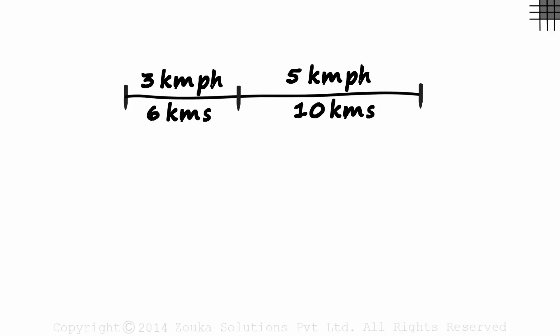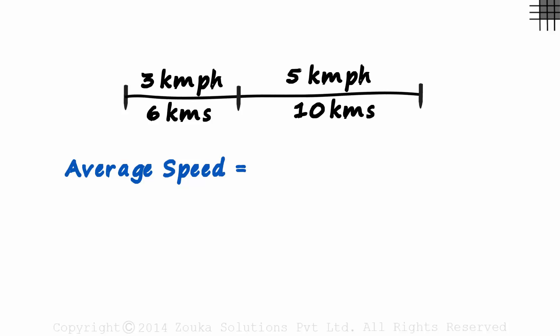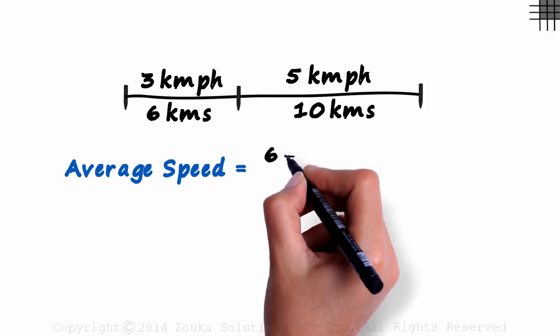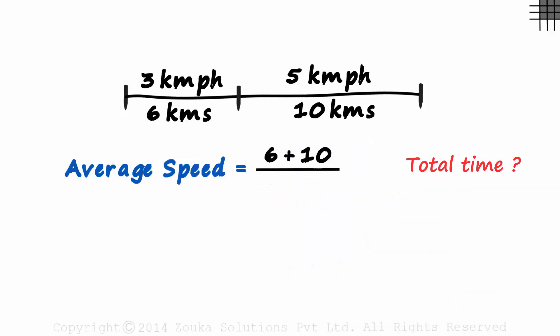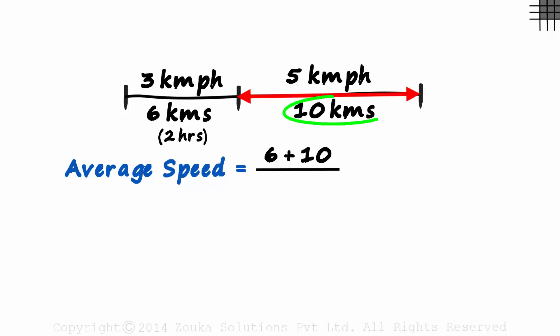Let's look at one last problem to understand average speed. Zen travels at 3 kilometers per hour for 6 kilometers, and at 5 kilometers per hour for 10 kilometers. What will be his average speed? Pause the video and solve this one. The average speed is the ratio of total distance to total time. The total distance is 6 plus 10. The time for the first part equals 6 over 3, or 2 hours, and the time for the second part equals 10 over 5, or 2 hours.